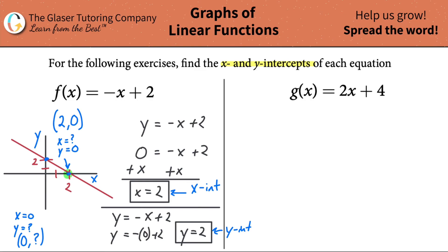So watch how fast we're going to do the second one. g of x is equal to 2x plus 4. Who cares that it says g of x? Call it y. So y is equal to 2x plus 4.